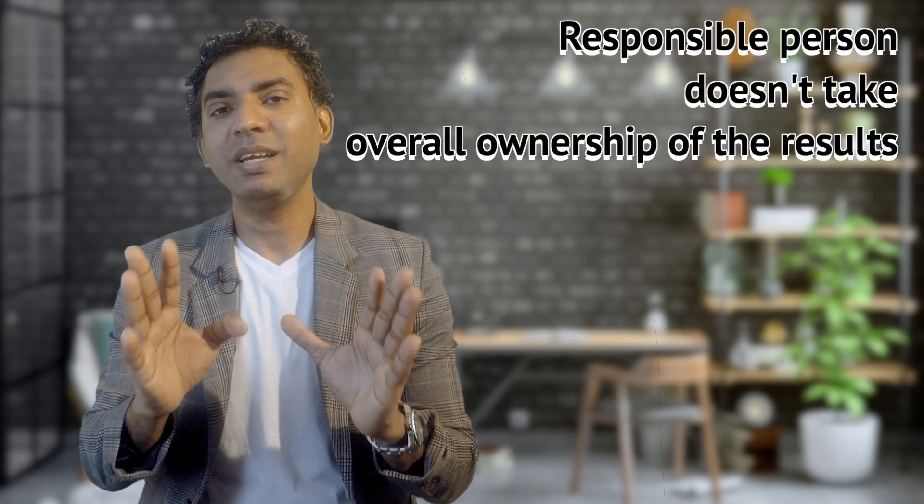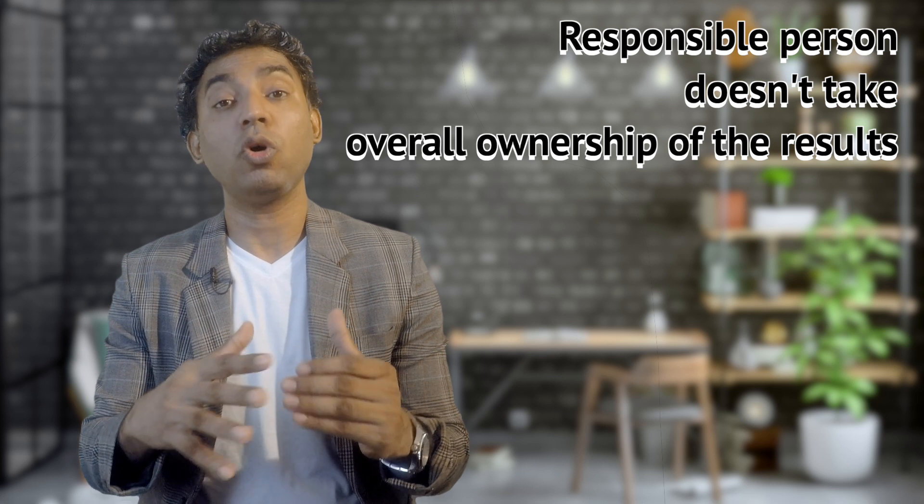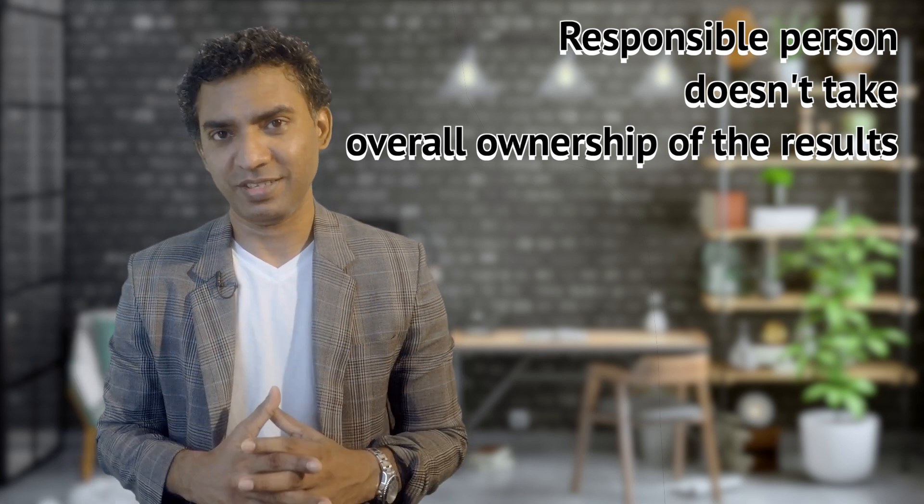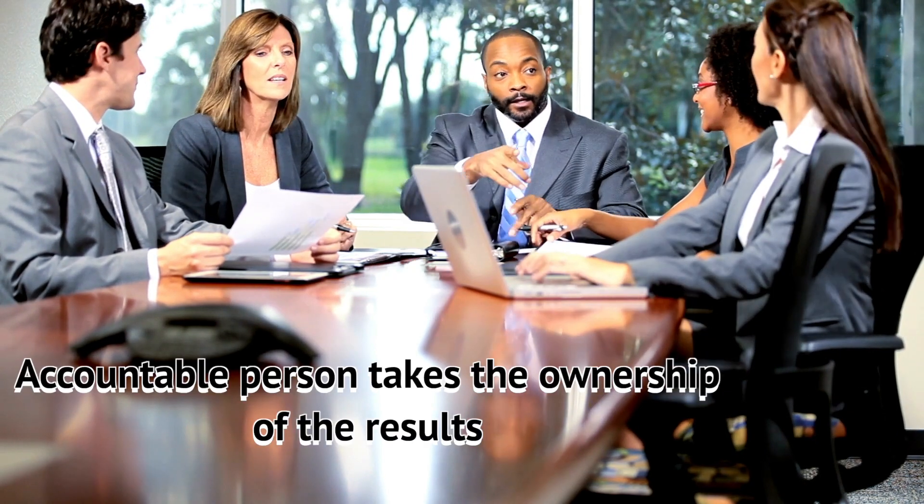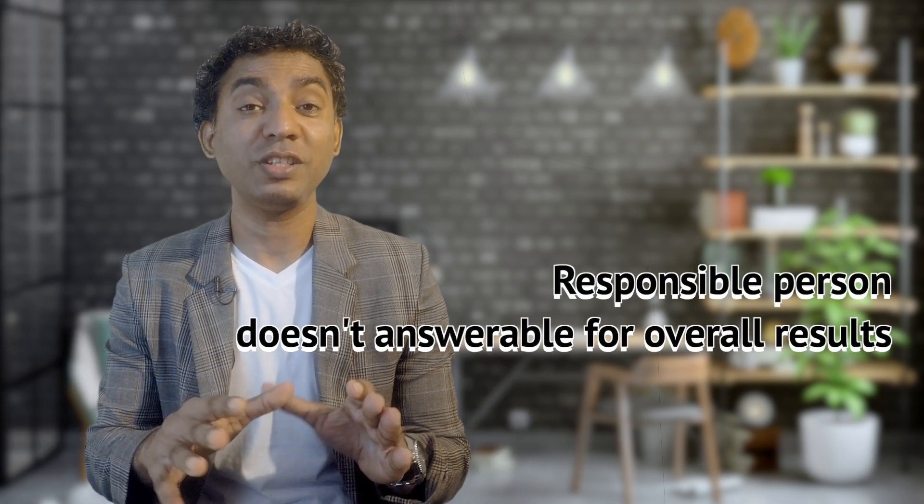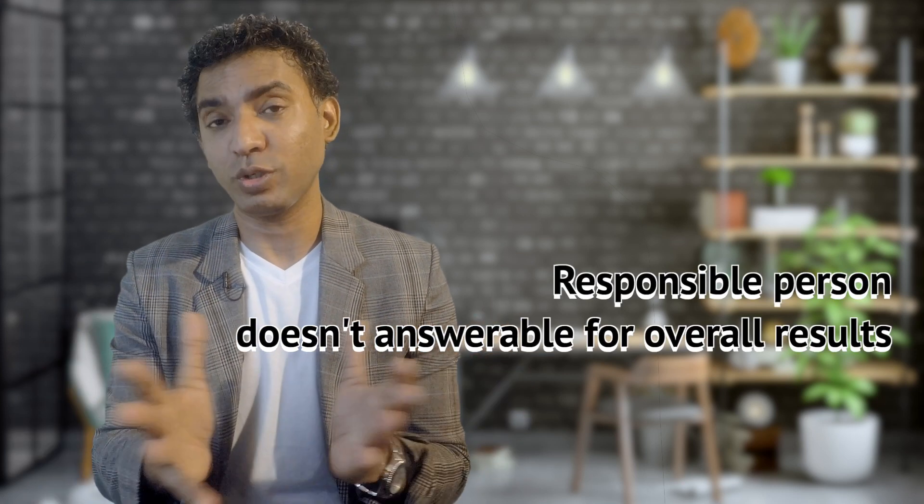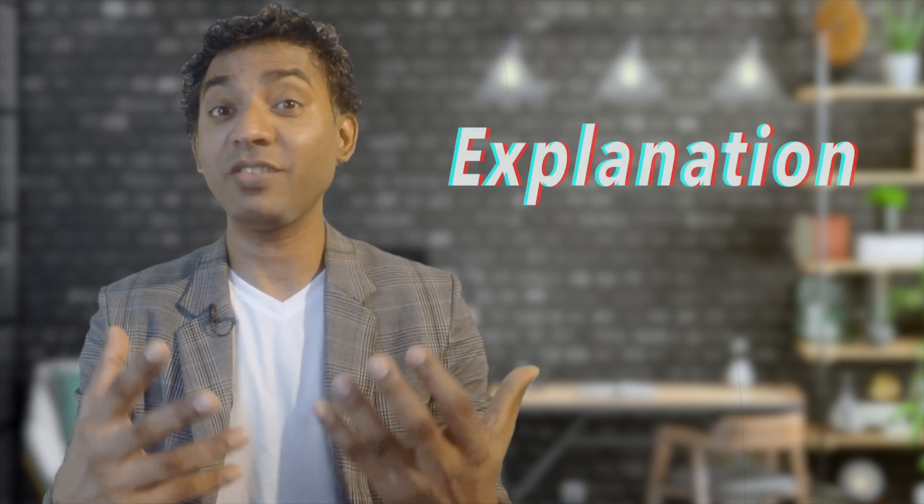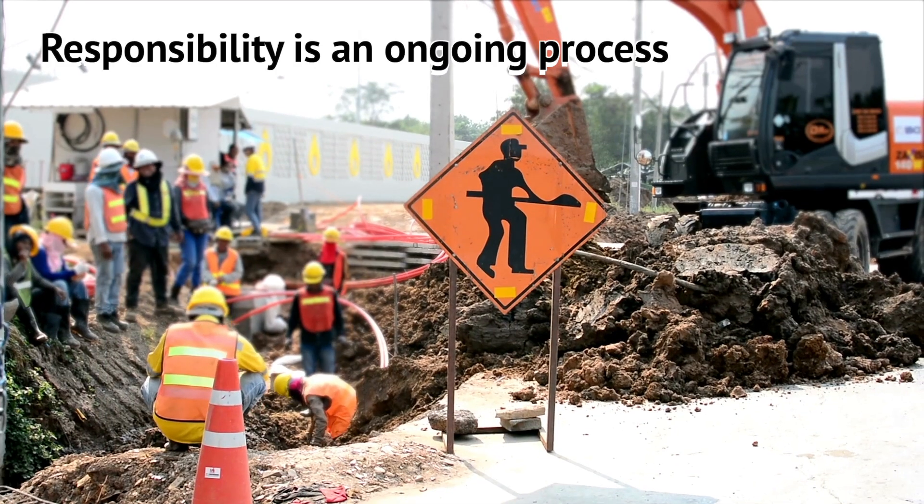When we say someone is responsible for something, it means that he doesn't take the overall ownership of the results. When we say someone is accountable for something, that means he has to take the ownership of the final results. When you are responsible for something, you don't need to give the explanation for the overall results. But if you are accountable for something, you need to give the explanation. You are answerable for the final outcome.